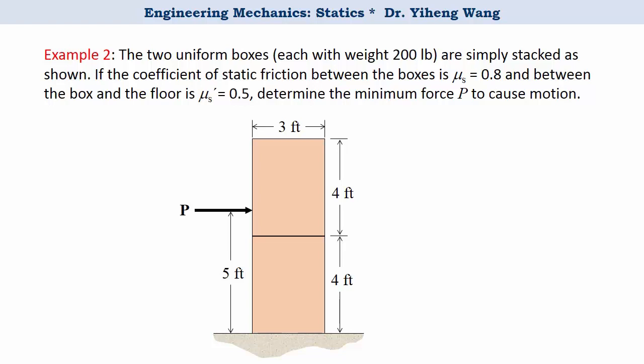Let's look at example two. There are two uniform boxes — they look identical, with the same dimensions and the same weight, 200 pounds each — simply stacked together one on top of another as shown. The coefficient of static friction between the boxes is mu_s = 0.8, and the coefficient of static friction between the box and the floor is mu_s' = 0.5. We are asked to determine the minimum applied force P to cause motion. However, the problem doesn't tell us what kind of motion it is, so we need to first think about how many possible motions there are.